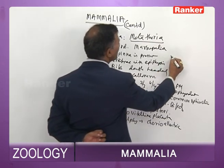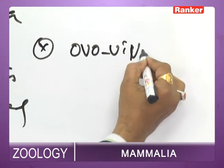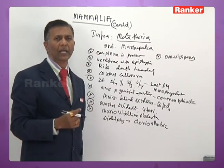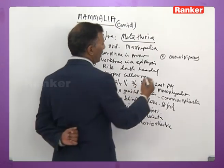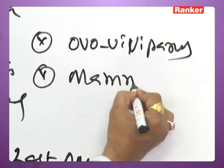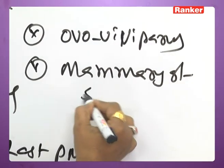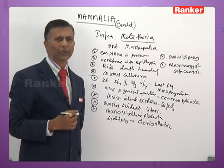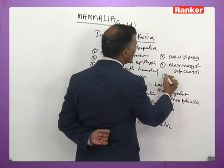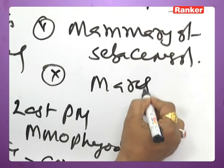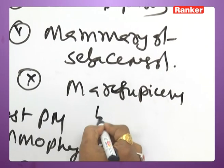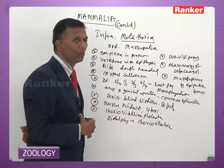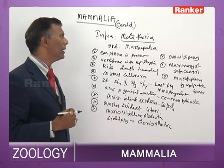They are ovoviviparous mammals — the young ones are born in an extremely helpless and tiny condition. Mammary glands are modified sebaceous glands with teats. Most marsupials have a pouch called marsupium, which is internally supported by epipubic bones.